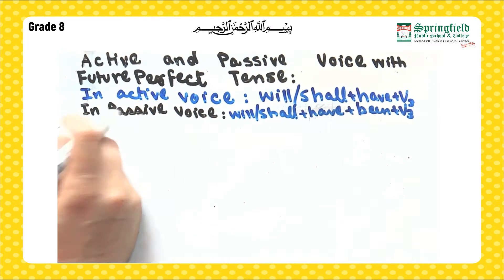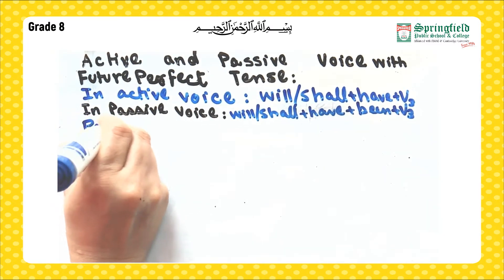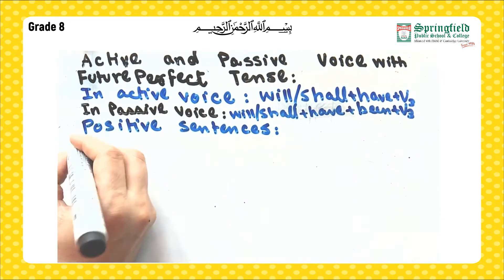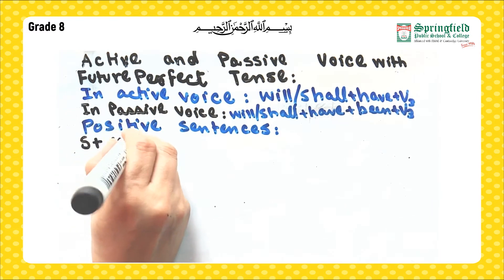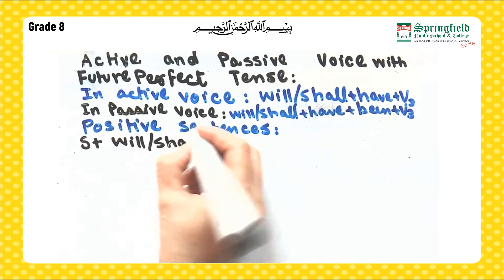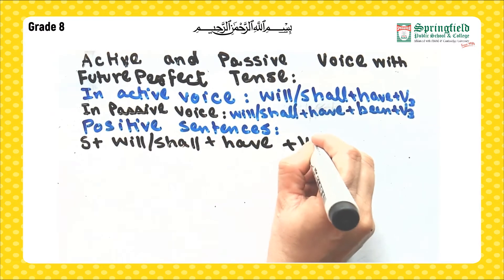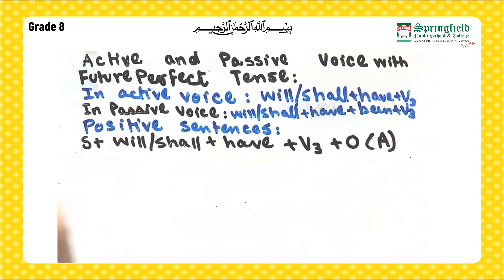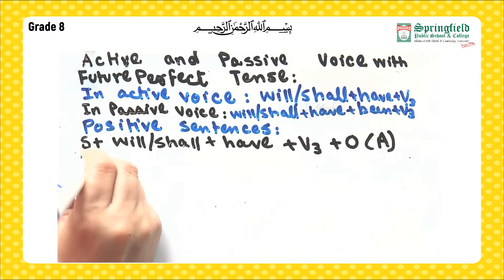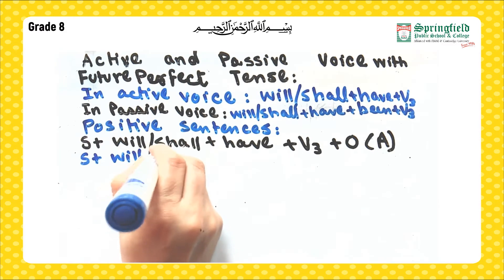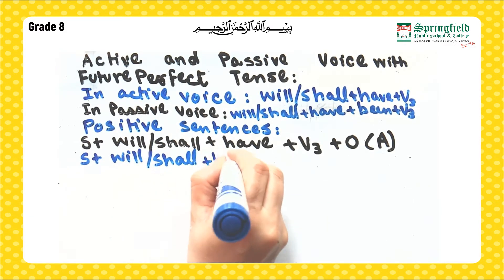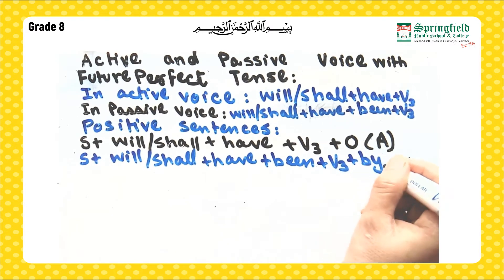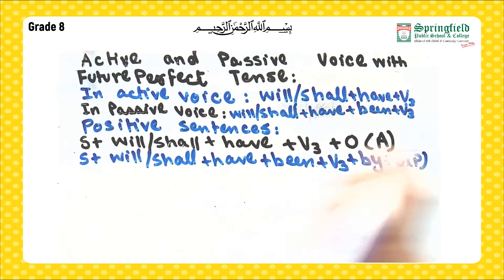Now let's move on to sentence construction. We are going to start with positive sentences. In positive sentences, the active voice construction is: subject plus will or shall plus have plus verb third form plus object. In passive voice it becomes: subject plus will or shall plus have plus been plus verb third form plus by plus object.